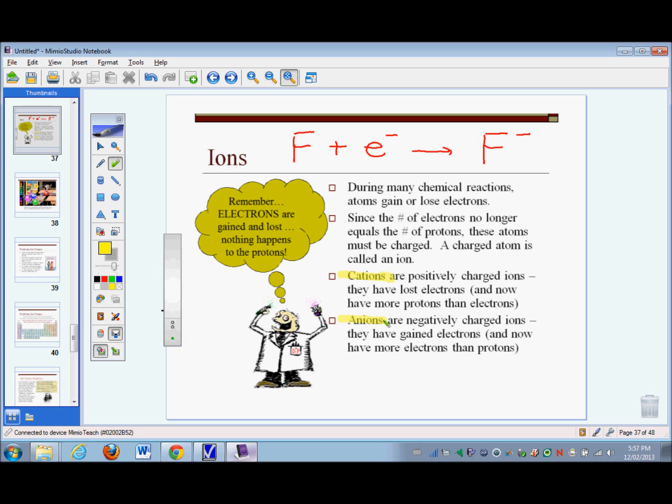Anions, on the other hand, are negatively charged. They've gained extra electrons, and now they have more electrons than protons, so they have a negative charge. A simple way to remember that is that the word anion begins with AN. Anions are negative. They've gained electrons.